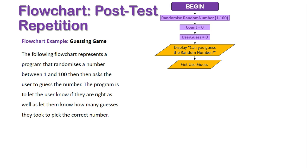Now, we have our stuff from the body of the loop coming up, but we haven't actually set the condition yet. Get the user guess, add one to count, display count, and then assess the actual condition.